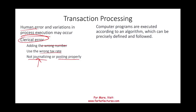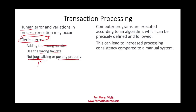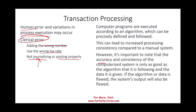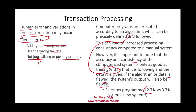In a computerized system, programs execute according to algorithms that can be precisely defined and followed, leading to increased processing consistency. Computer systems don't get tired. However, the accuracy of the output is only as good as the algorithm — if the sales tax is programmed at 2.3% instead of 3.7%, that becomes a systematic error. This typically happens in new systems or when there is no proper change control.